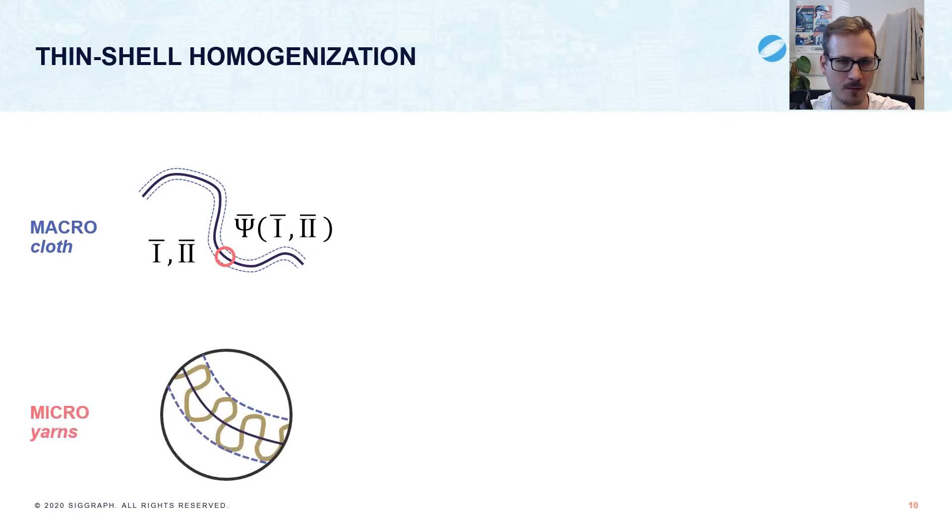On the micro scale, the cloth has some microstructure to it, which in our case means yarns. Then the homogenization procedure is to take the macroscale deformation and apply it to the microscale, inspect how it reacts, and average its energy back up to an energy density value on the macroscale.